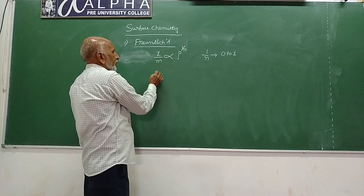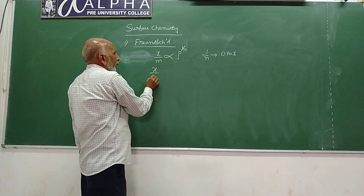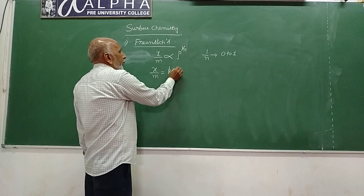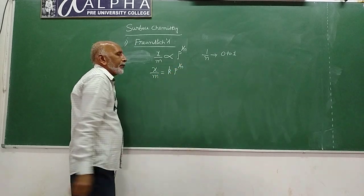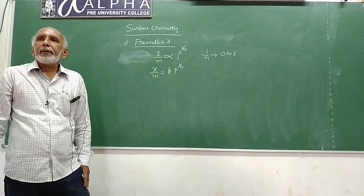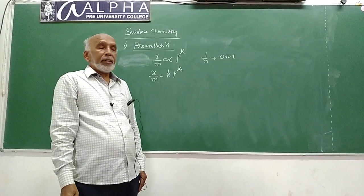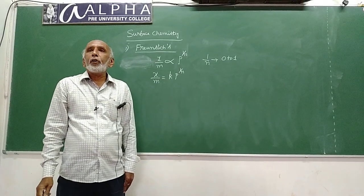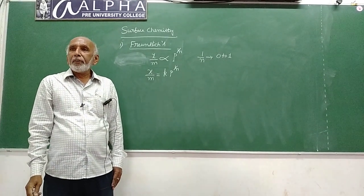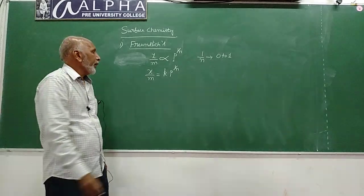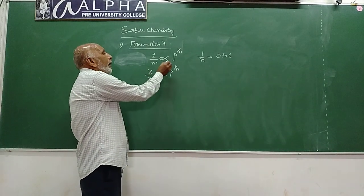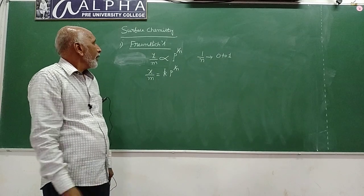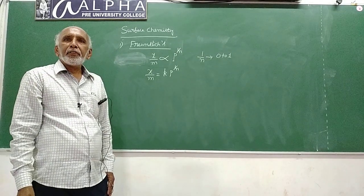We can write this expression as x by m is equal to k into p to the power 1 by n. Here, k is the proportionality constant, known as the adsorption coefficient. This is one form of the Freundlich adsorption isotherm.